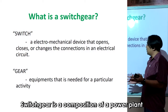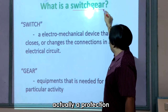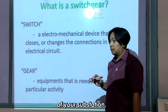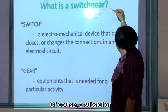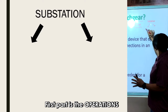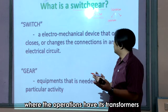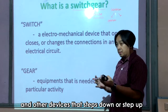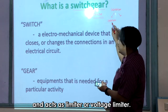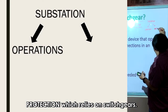Switchgear is a composition of a power band or a substation. A switchgear is actually a protection of your substation. A substation must have two important parts. The first part is the operations, which have transformers and other devices that step down or step up voltage, or act as a switch and a voltage limiter. But a substation also needs protection, which relies on switchgear.